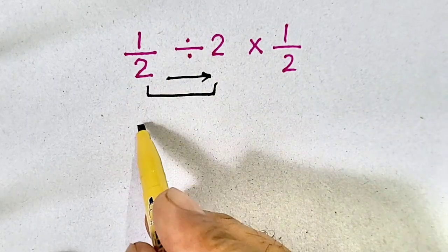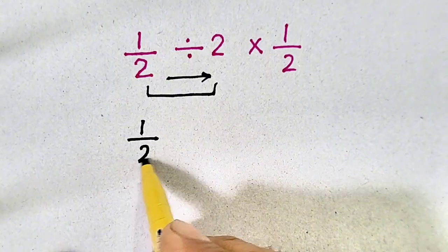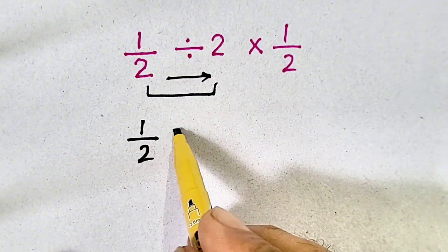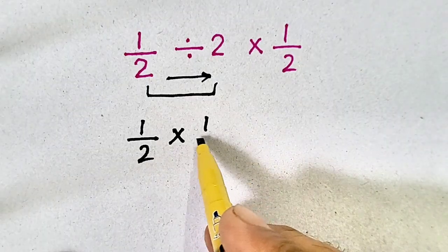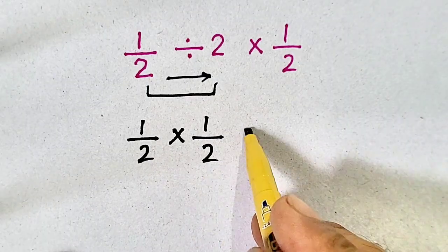What is KCF? First one is kept as it is. Division is changed into multiplication and flip the 2. It will become 1/2.